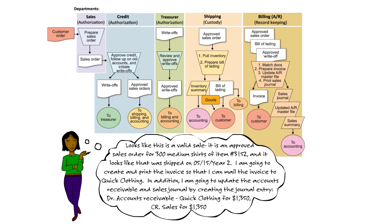In addition, I'm going to update the Accounts Receivable Sales Journal by creating Journal Entry, Debit Accounts Receivable, Quick Clothing for $1,350, Credit, Sales for $1,350.